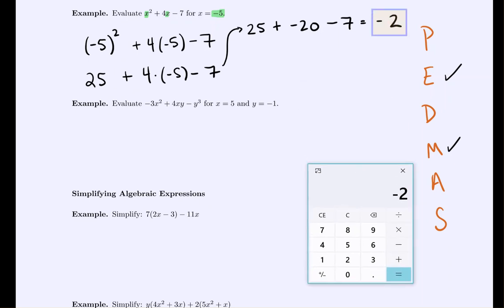Now sometimes we are going to evaluate expressions that have multiple variables. So in our next example we are looking at negative 3x squared plus 4xy minus y cubed. And we're told to evaluate it when x takes on the value 5 and when y takes on the value negative 1. So everywhere there's a y in the expression we would replace that with negative 1. Everywhere there's an x in the expression we would replace that with 5.